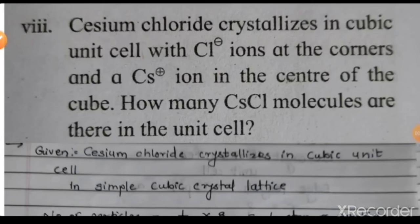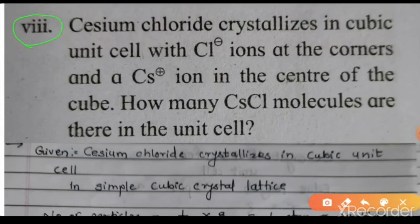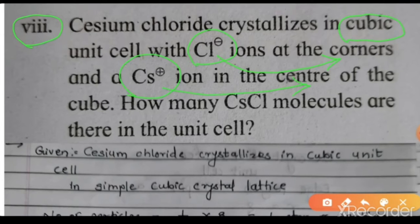Today we are going to solve the numericals from the board textbook. Numerical number 8: Cesium chloride crystallizes in a cubic unit cell with Cl⁻ ions at the corners and Cs⁺ ion in the center of the cube. How many cesium chloride molecules are there in the unit cell?